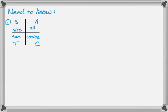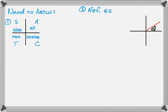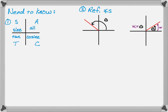The next thing we need to know about are reference angles and how to find them, which varies by quadrant. In the first quadrant, the reference angle alpha equals theta — that's the easiest. In the second quadrant, alpha equals pi minus theta, or 180 degrees minus theta if working in degrees.